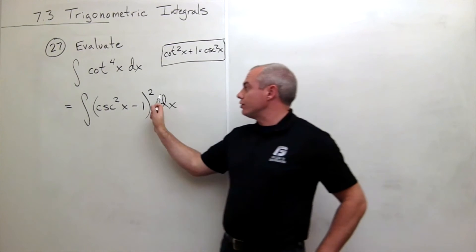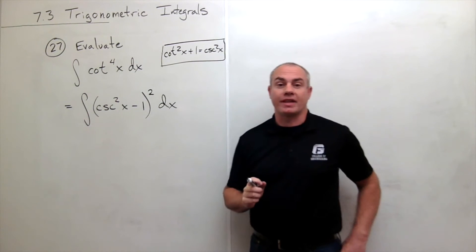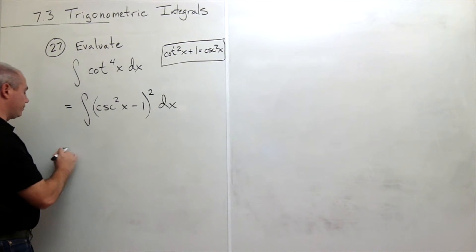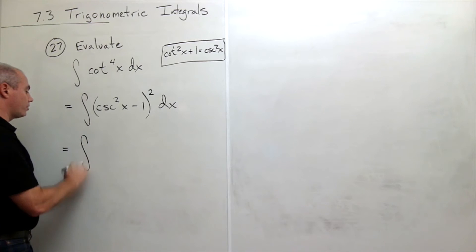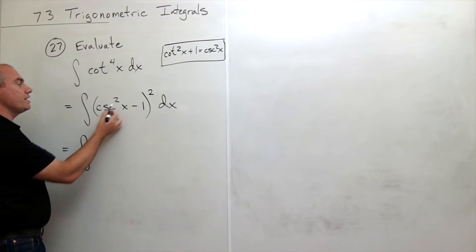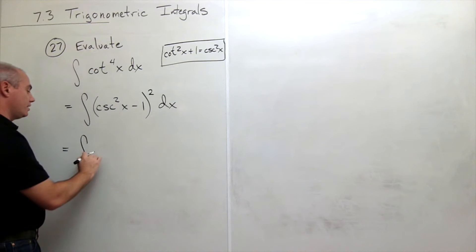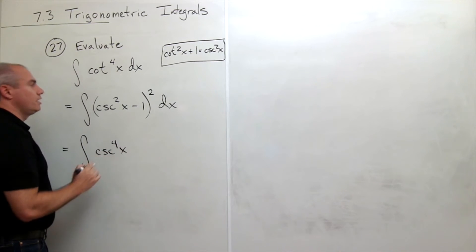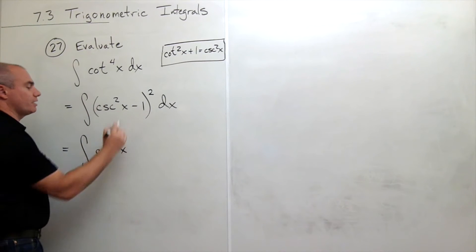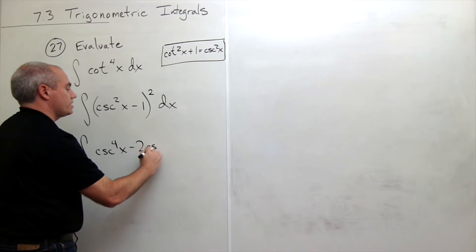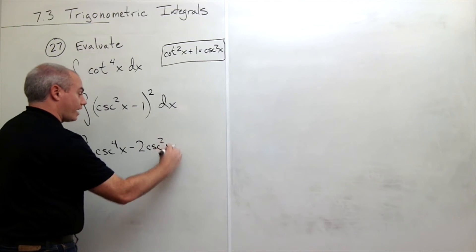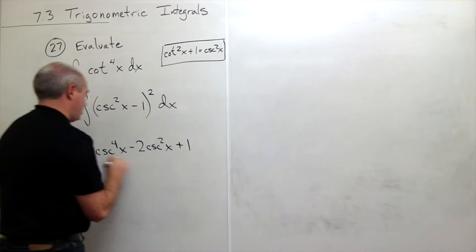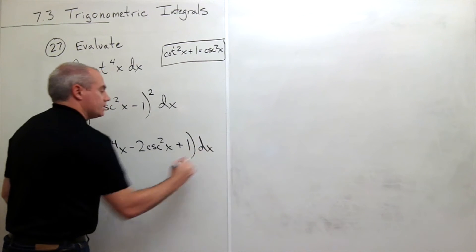Now what I want to do is square this out and see what that actually gives me. If I square that, I get the following. This is equal to the integral of: if I square cosecant squared of x, then I get cosecant to the fourth of x, then minus two cosecant squared of x, and then I square the negative one and get plus one, all of that dx.